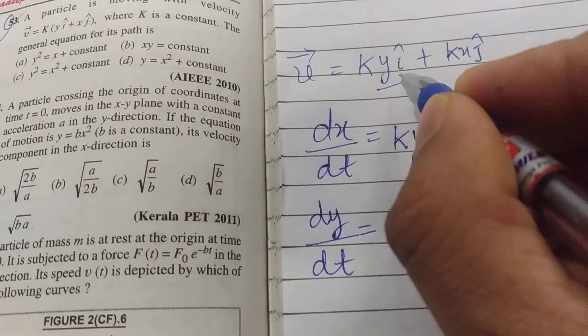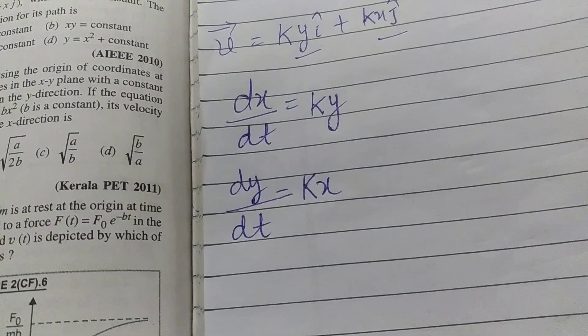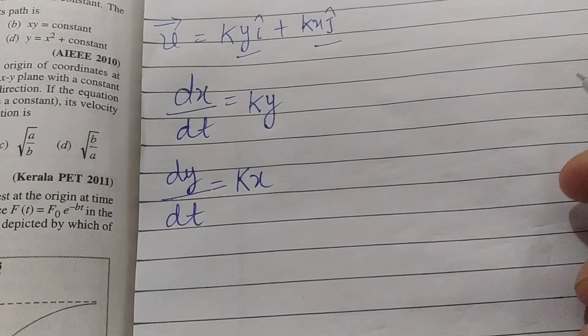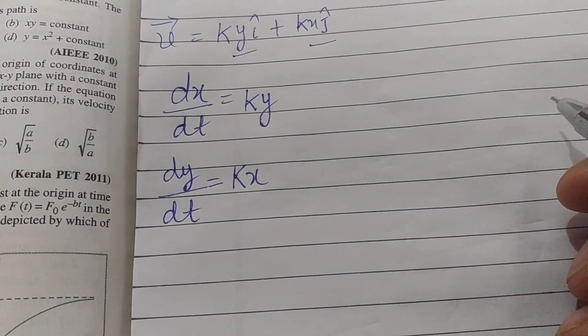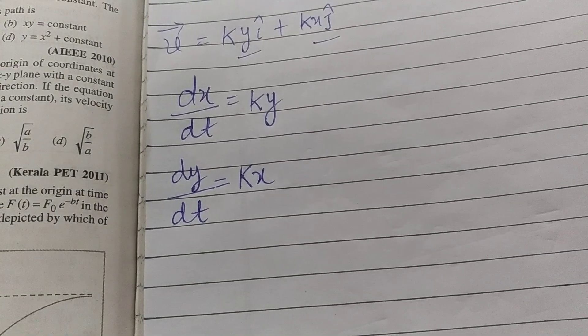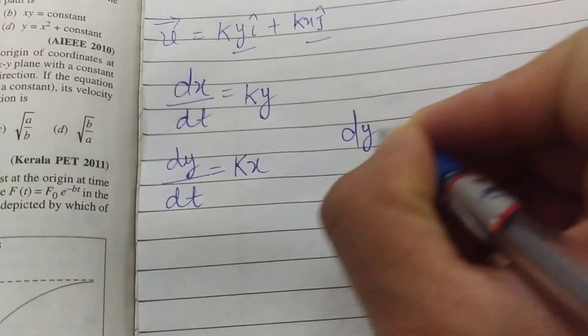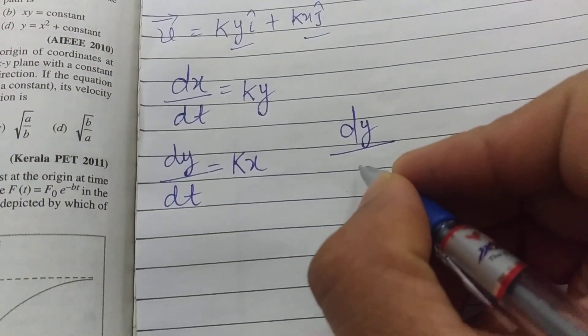This is j cap, this is i cap. i cap is for the x component, j cap for y component. We are given dx by dt in the question. For the path, we have to relate the y coordinate and x coordinate. I will write dy by dx accordingly.